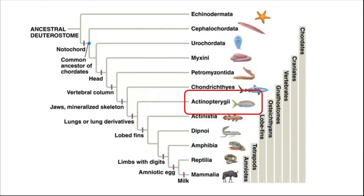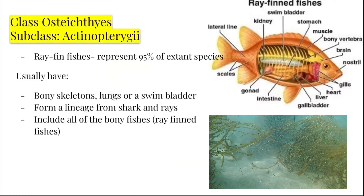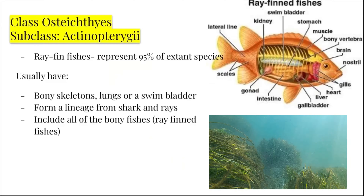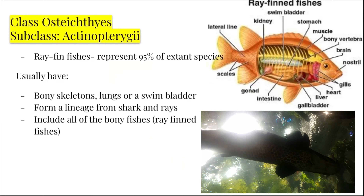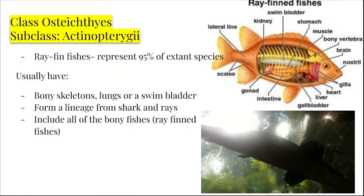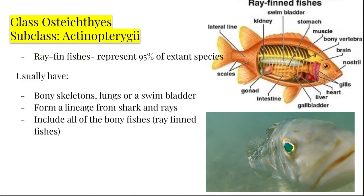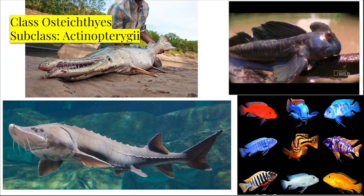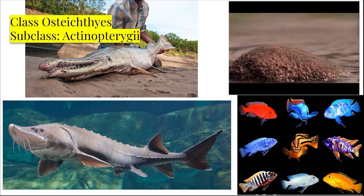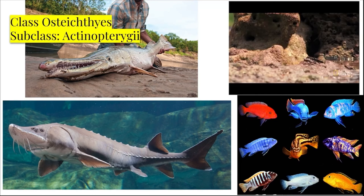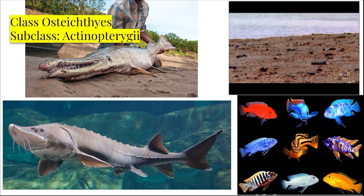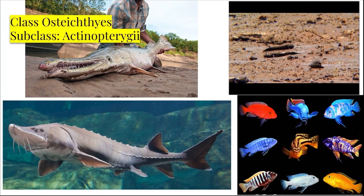Now let's move on to the Osteichthyans. The first group we'll look at is Actinopterygii. Actinopterygii includes the ray-finned fishes. Ray-finned fishes represent about 95% of extant species of fish. They usually have bony skeletons and lungs or a swim bladder. Here you can see several examples of bony-finned fish, including cichlids on the bottom right discussed in earlier classes. On the bottom left is sturgeon, a species that gives us caviar but is also endangered. On the top right you can see mudskippers, which live on the tidal mudflats of Southeast Asia.